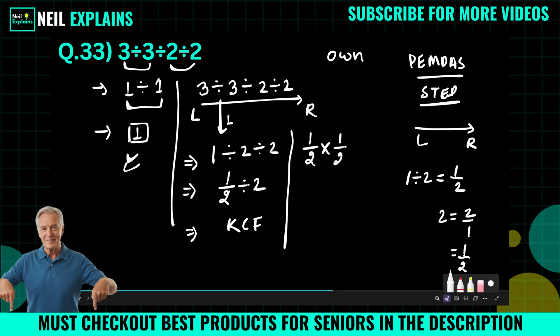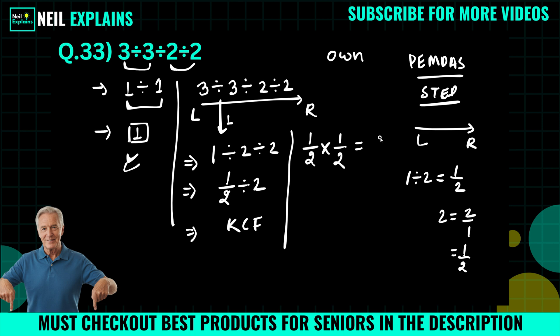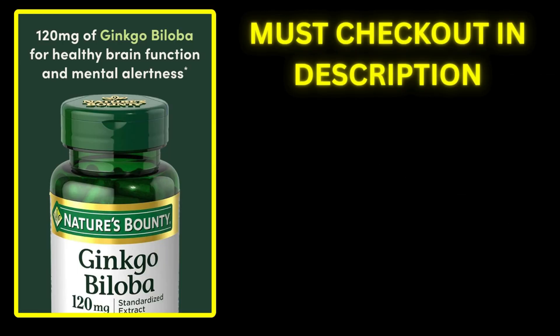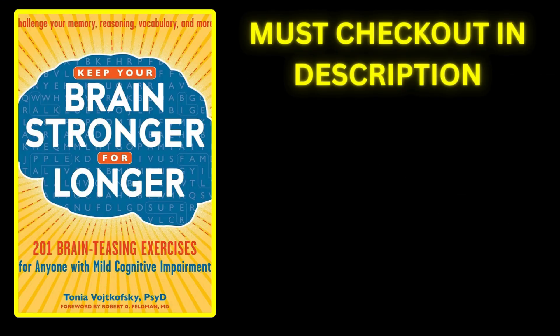So we will simply write 1 by 2 here, and now 1 times 1, that is 1, and 2 times 2, that is equal 4. So here the right answer is 1 by 4.